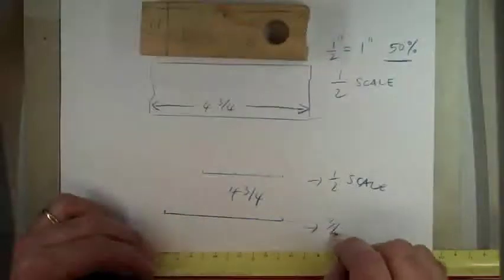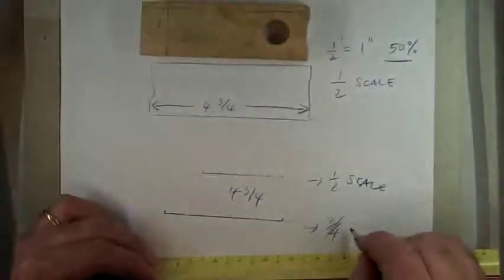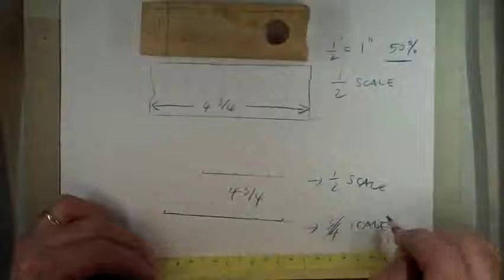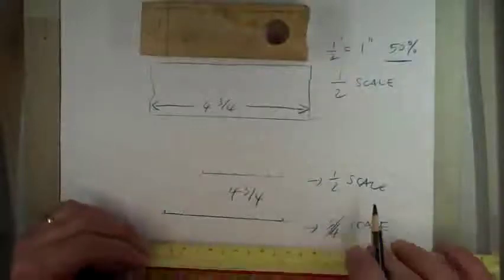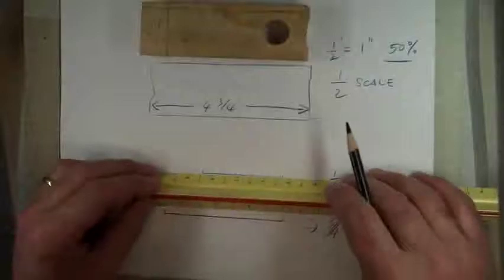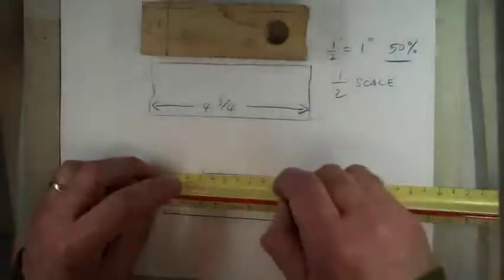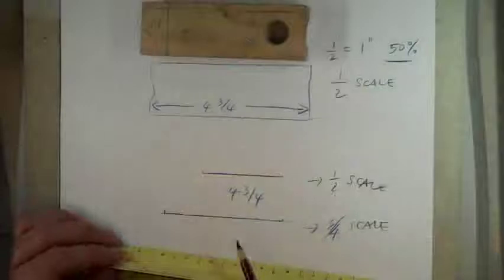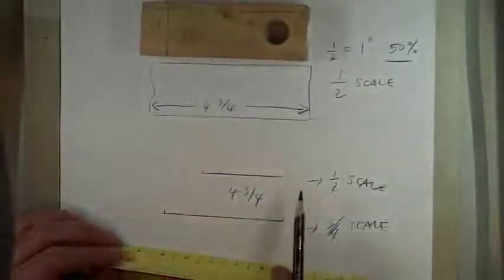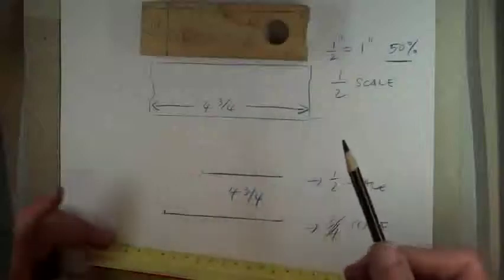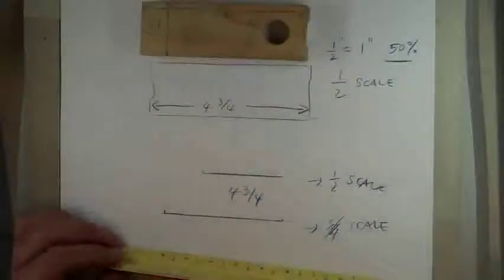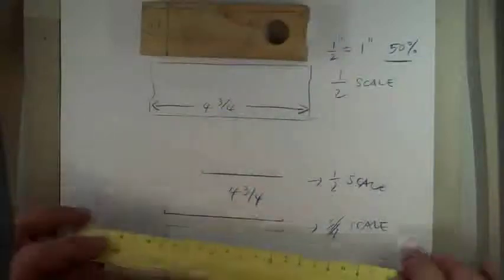Okay, so that's three quarters again. The numbers are four and three quarters, except at various scales. That's four and three quarters at three quarters scale. That's four and three quarters at half scale. That's four and three quarters at full scale, right? Actual size.